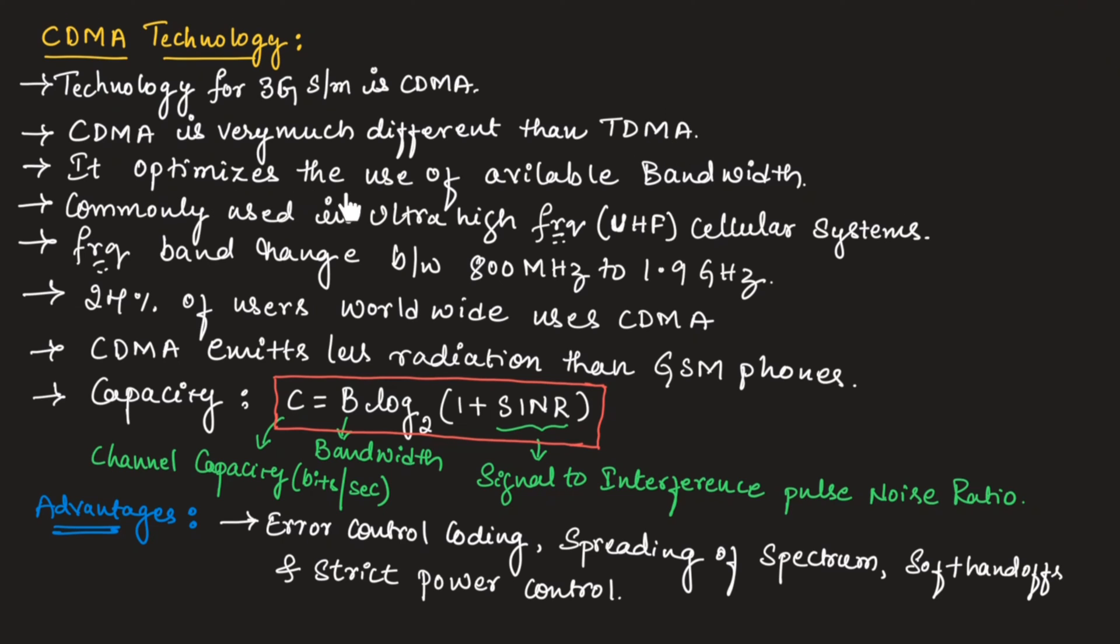CDMA optimizes the use of available bandwidth, which means it will make use of available bandwidth. This technology is commonly used in ultra high frequency cellular system, which is UHF cellular systems. The frequency band range of CDMA is ranging between 800 megahertz to 1.9 gigahertz.